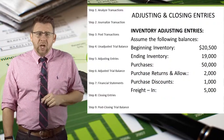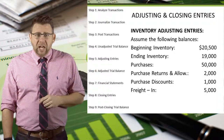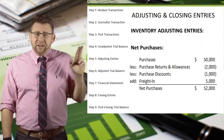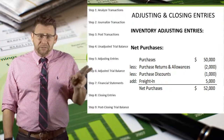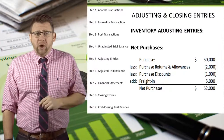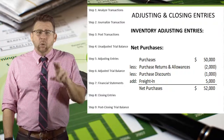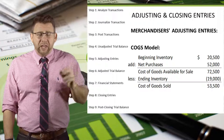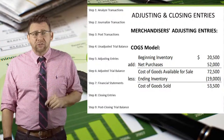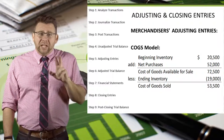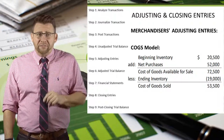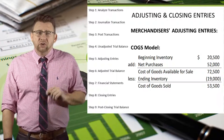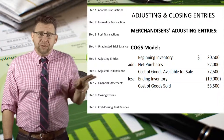Let's look at an example. Assume the following account balances and plug those into the cost of goods sold model. Purchases of $50,000 minus purchase returns and allowances of $2,000, minus purchase discounts of $1,000, plus freight in of $5,000, equals net purchases of $52,000. Now we take beginning inventory of $20,500 plus net purchases of $52,000, which equals the cost of goods available for sale of $72,500. From that we subtract ending inventory of $19,000 to arrive at cost of goods sold of $53,500.